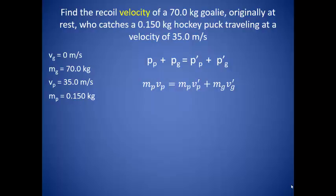Since the goalie catches the puck, we can assume it is stuck to him, and they are moving as one unit. If this is true, we can make this a little easier by saying that the velocity of the puck and the velocity of the goalie are the same after the collision. This is actually what we are looking for, so moving a few terms around, we can get it by itself.